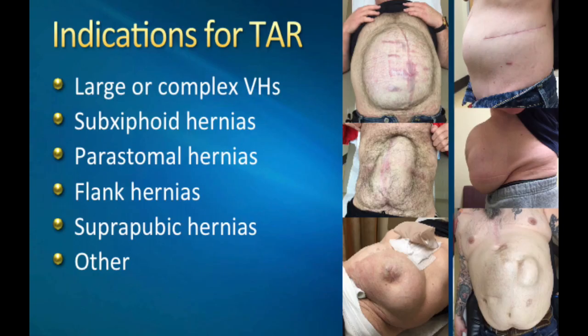So when do I use TAR? TAR is my go-to procedure for larger complex ventral hernias. But also for more atypical hernias — things like subxiphoid hernias, someone who's had a previous sternotomy with non-healing or non-union of their sternum, peristomal hernias, flank hernias especially if there's a midline component, suprapubic hernias, as well as a wide variety of large and/or complex ventral hernias.